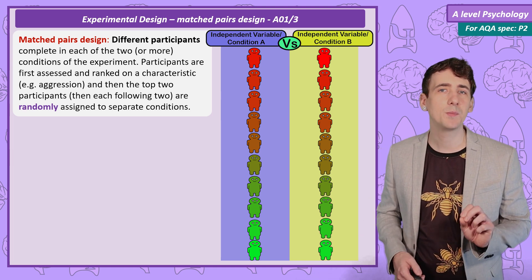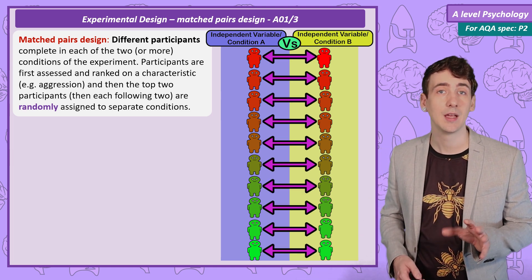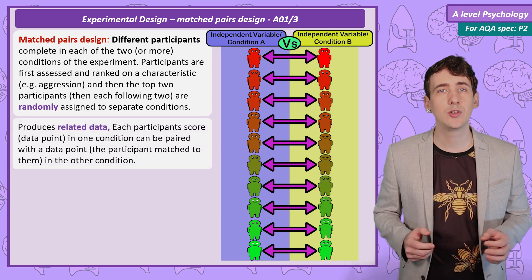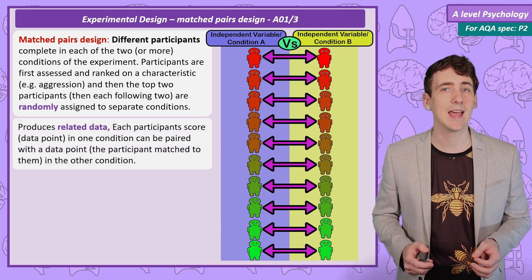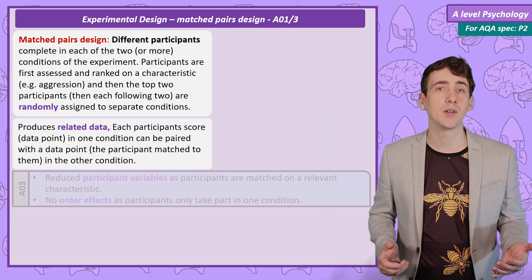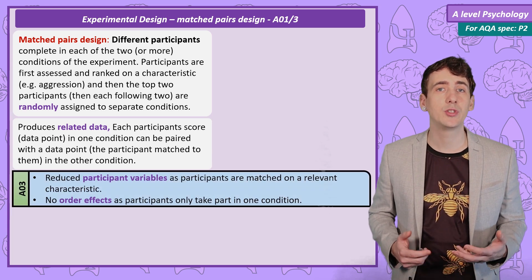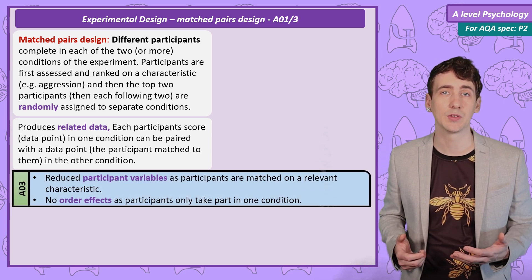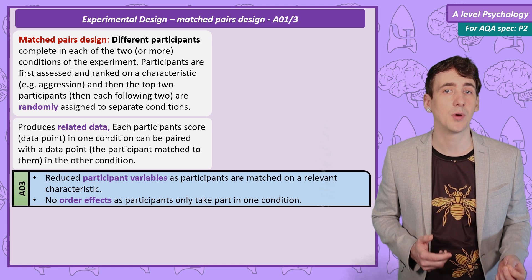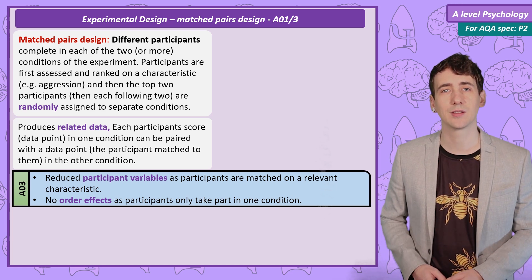The results for each pair in each condition are compared in the same way as repeated measures design, so we treat the data again as related data. And as the participants are similar to each other, we have reduced the effect of participant variables. As each participant only takes part in one condition, we have also removed order effects.